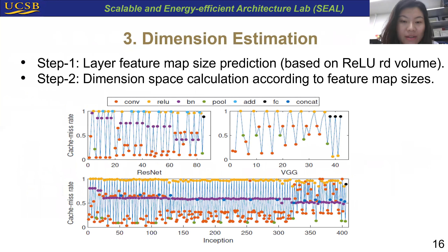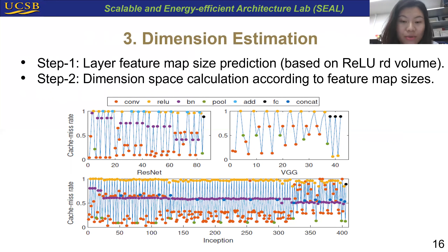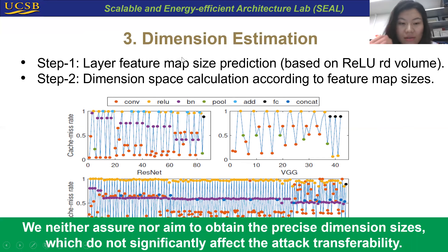The third step is to estimate the dimension sizes. We first characterized the cache miss rate in the GPU platform. For most DNN models, ReLU kernels have a stable high cache miss rate surpassing 98% for most cases, as shown by the orange dots. Hence, the read volume of the ReLU layers is almost fully proportional to the feature map size. The feature map sizes of the layers in the victim model can be estimated by broadcasting the ReLU size to the adjacent layers. Then we do the math to estimate the dimension space according to the feature map sizes. We never require obtaining precise dimension parameters since they do not significantly affect attack transferability.